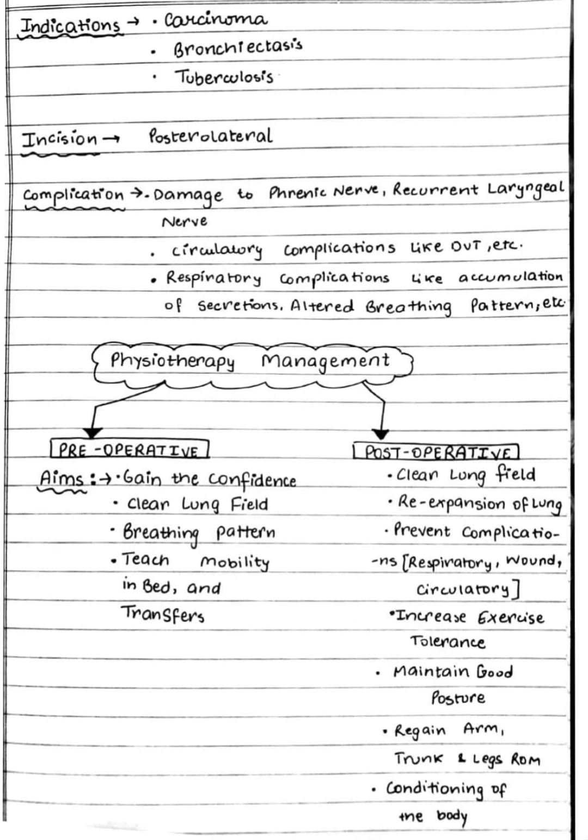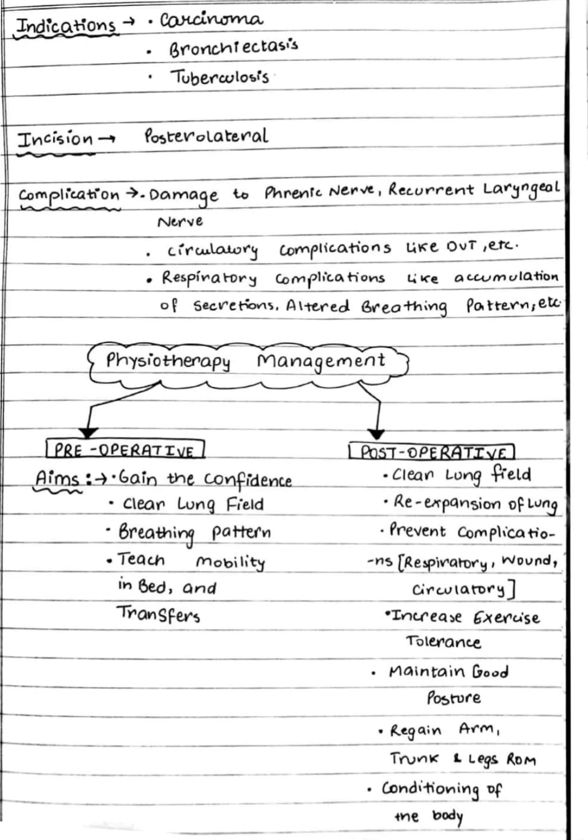In the post-operative phase, the main aim is scoliotic posture correction. We have to clear all secretions from the remaining lung and retain full expansion of the remaining lung tissue. We have to prevent circulatory and wound complications, maintain good posture, and restore the exercise tolerance of the patient.